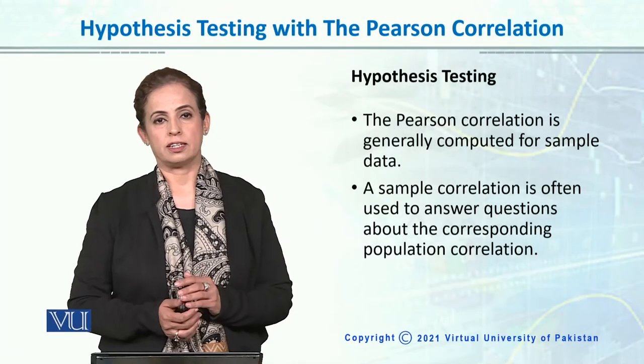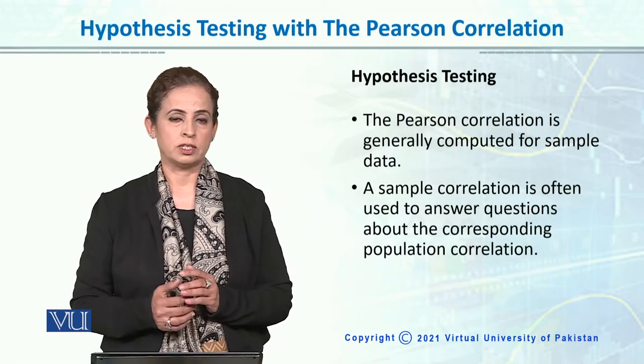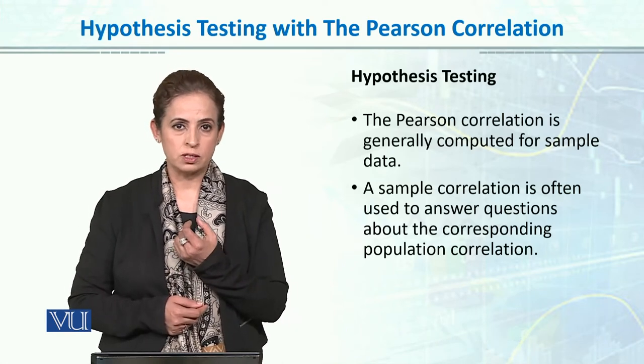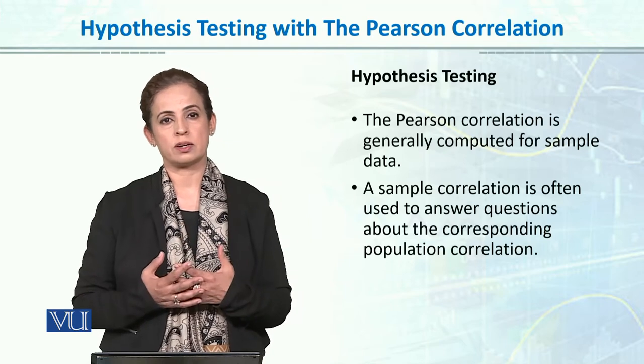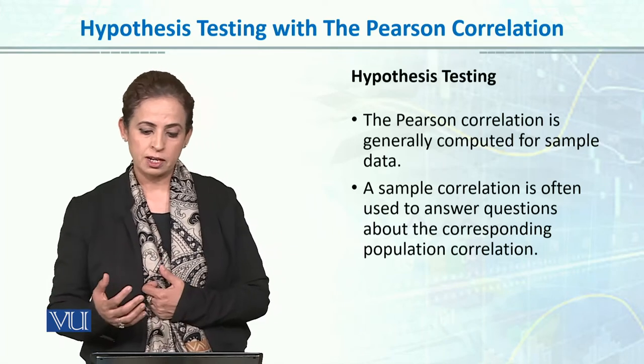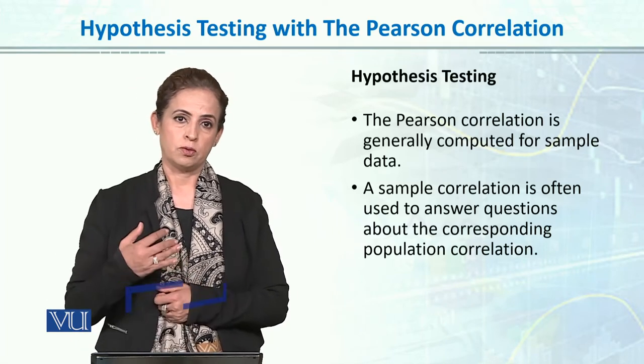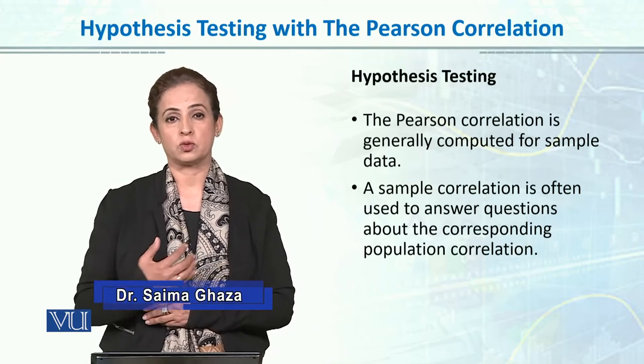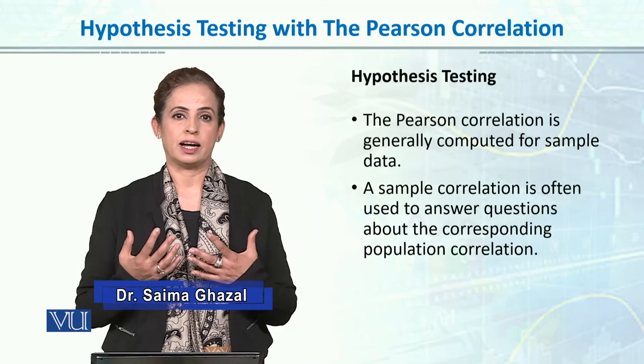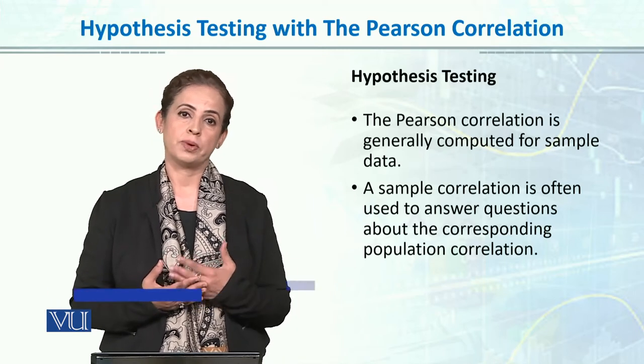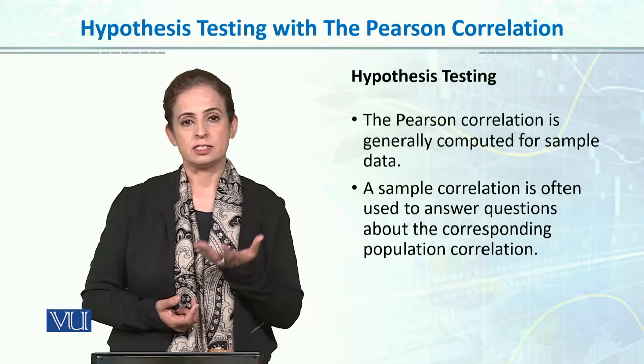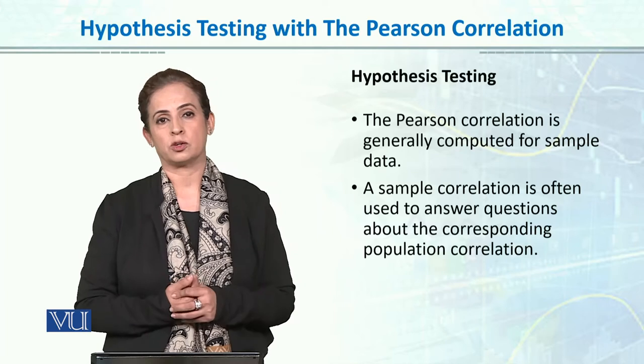As we did earlier for t-test or ANOVA, once we calculate, we test the hypothesis because we are not interested in the small sample but rather in the general population from which we extracted the sample. Similarly for correlation, once we know what correlation is, its characteristics, why and how we calculate it, the next step is to test the hypothesis about the population from which we removed the sample.